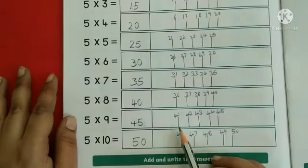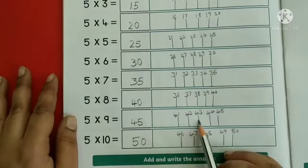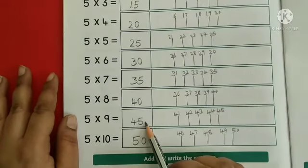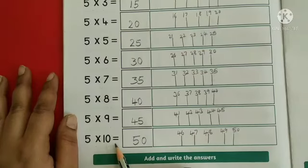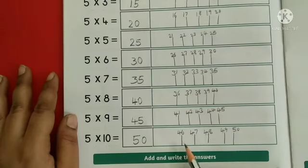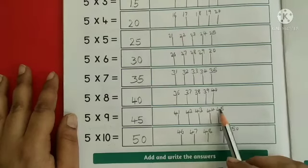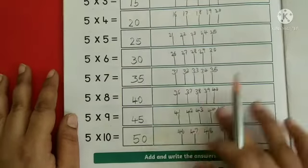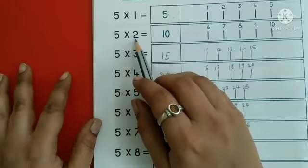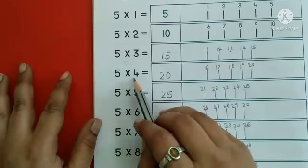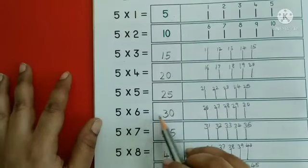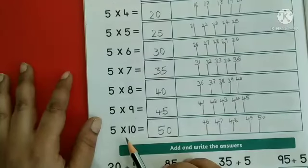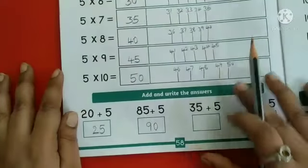Next, 5 into 9 is equal to — draw 5 lines: 1, 2, 3, 4, 5. After 40: 41, 42, 43, 44, 45. Write number 45 here. Next, 5 into 10 is equal to — draw 5 lines: 1, 2, 3, 4, 5. After 45: 46, 47, 48, 49, 50. Write number 50 here. 5 ones are 5, 5 twos are 10, 5 threes are 15, 5 fours are 20, 5 fives are 25, 5 sixes are 30, 5 sevens are 35, 5 eights are 40, 5 nines are 45, 5 tens are 50.